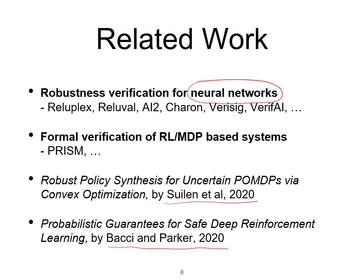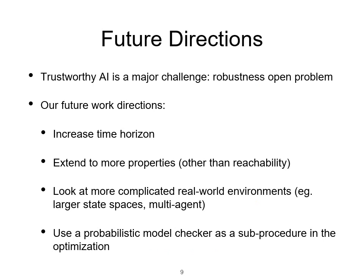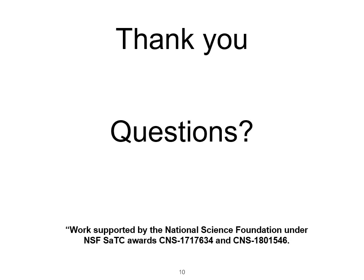Now in terms of future directions, trustworthy AI is obviously a major challenge and robustness is an open problem. What we want to do is improve our methods so that we can handle larger time horizons, more properties not just reachability, more complicated environments, larger state spaces for example. And we want to use a probabilistic model checker as a sub-procedure instead of a classic optimization package, which will likely be needed in order to handle more complicated properties. So with that, I would like to thank you for listening and welcome your questions. Thank you.